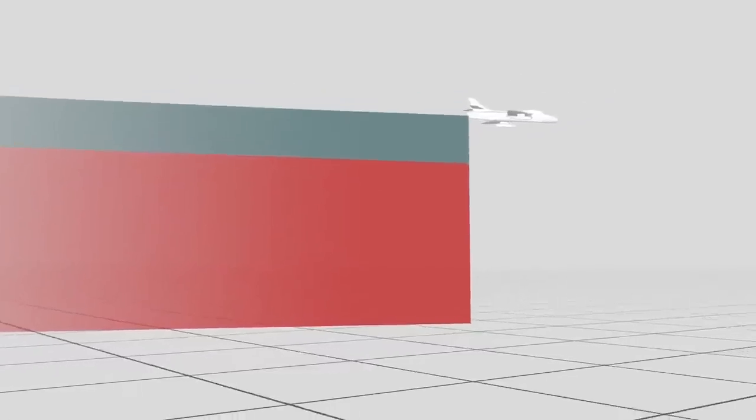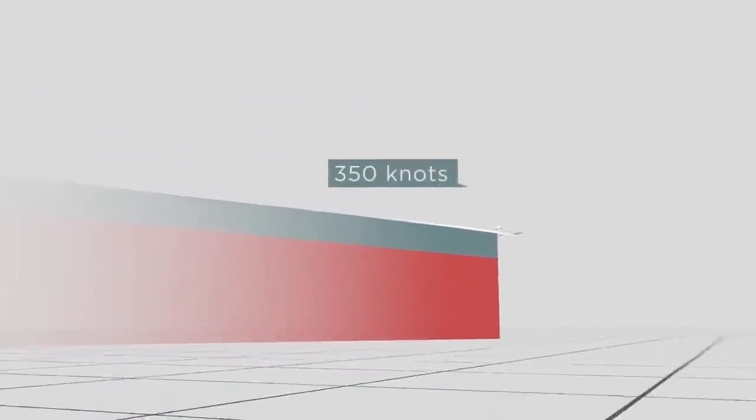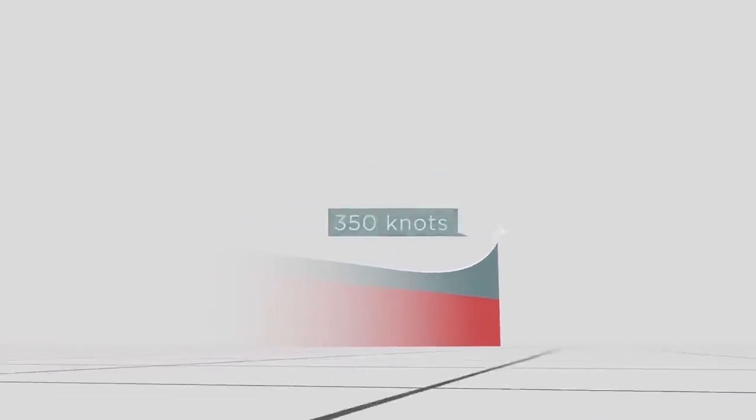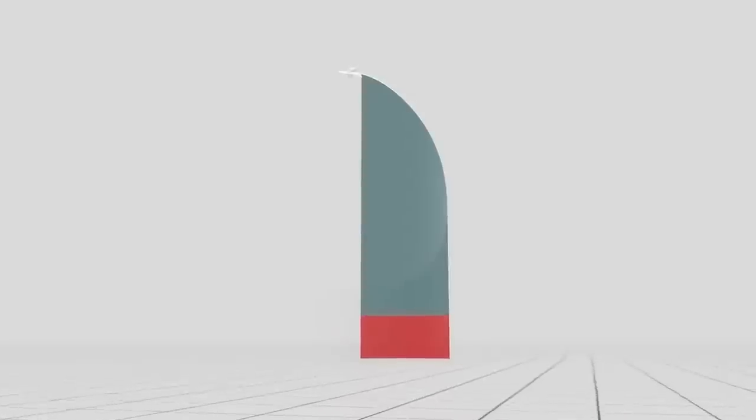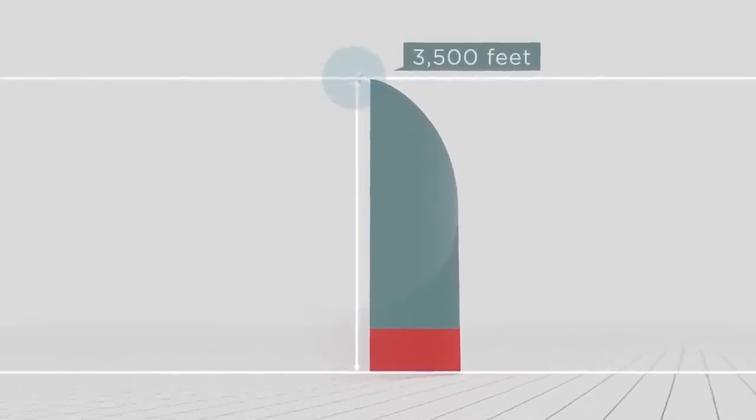The normal technique for this maneuver was to enter at a speed of at least 350 knots and to apply maximum engine thrust during its upward half, aiming to achieve a height of at least 3,500 feet at its apex.